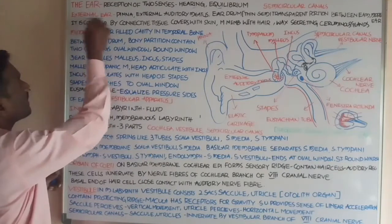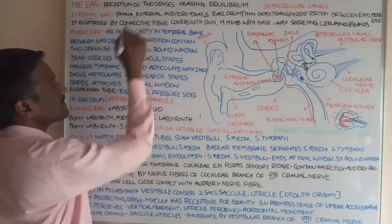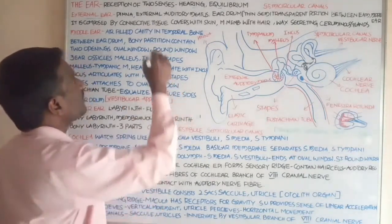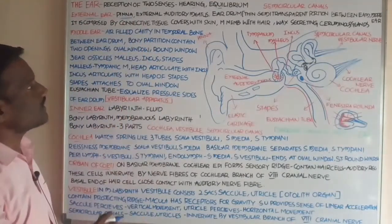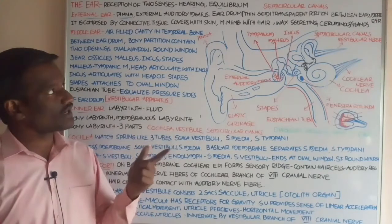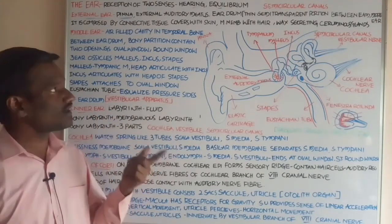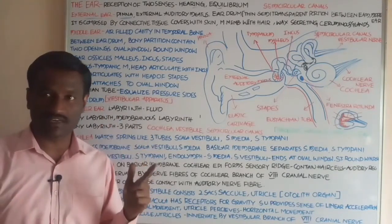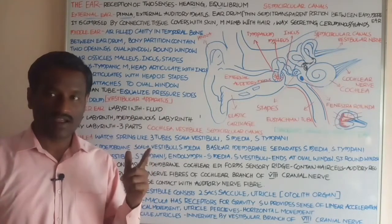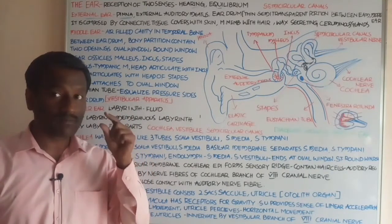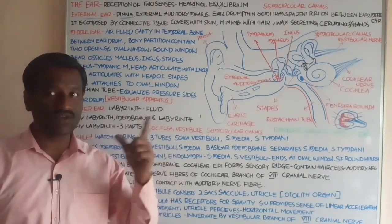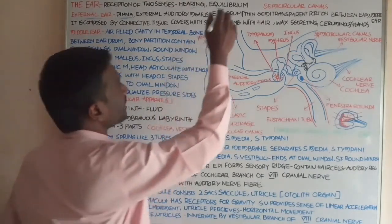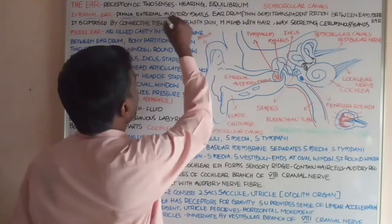The external ear has three parts: pinna, external auditory meatus, and the eardrum. The pinna is the outer portion of the external ear, covered with skin, and an elastic membrane is present in it. It receives sound waves from the outer surrounding areas.